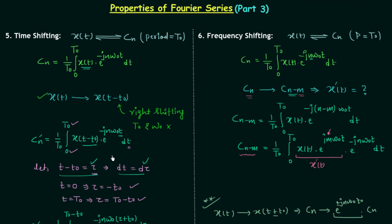To conclude: if we have x(t) · e^(jmω₀t), this means we have cn-m as the Fourier coefficient, because m is the amount by which frequency shifting is taking place. This is the frequency shifting property — remember it. This is all for this lecture; in the next lecture we will deal with the next two properties.